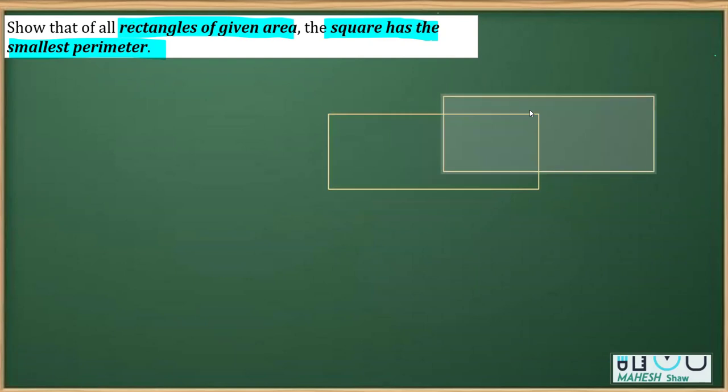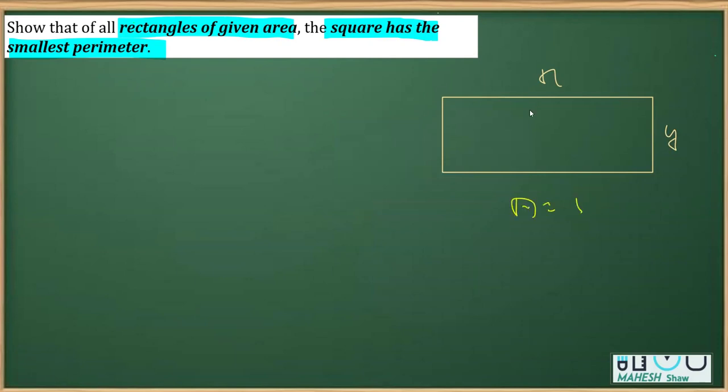Let's begin with taking a rectangle. I took the rectangle whose length is x and breadth is y, and we know that area of rectangle which is xy is constant. And what we have to minimize is the perimeter, and the perimeter of a rectangle is 2 times length plus breadth.